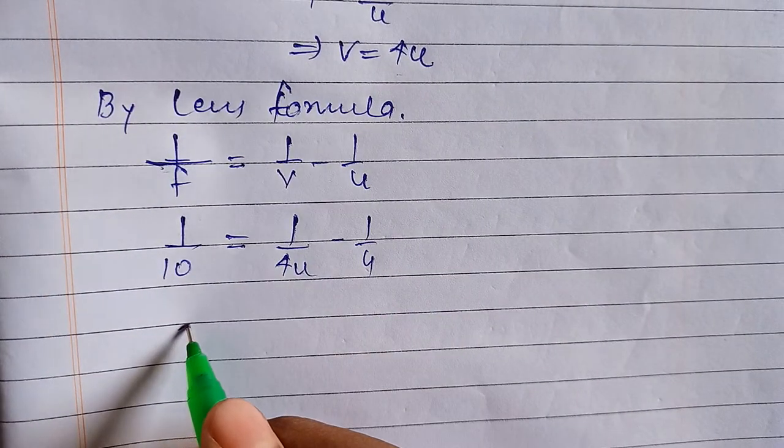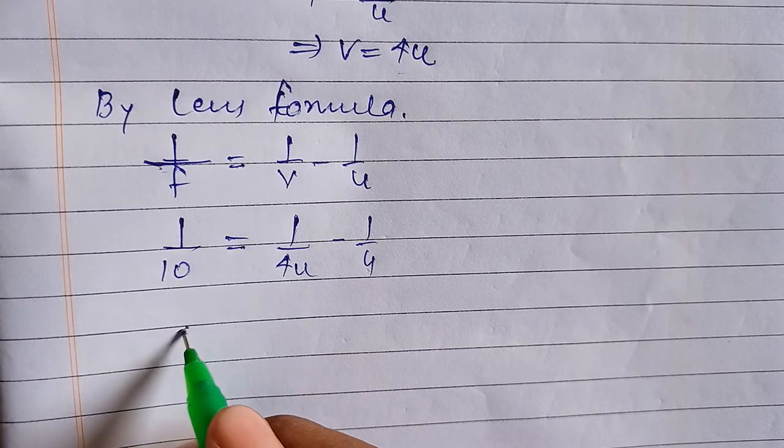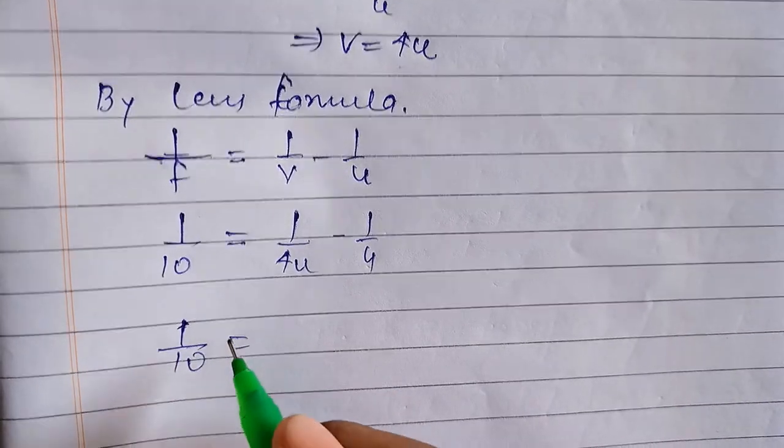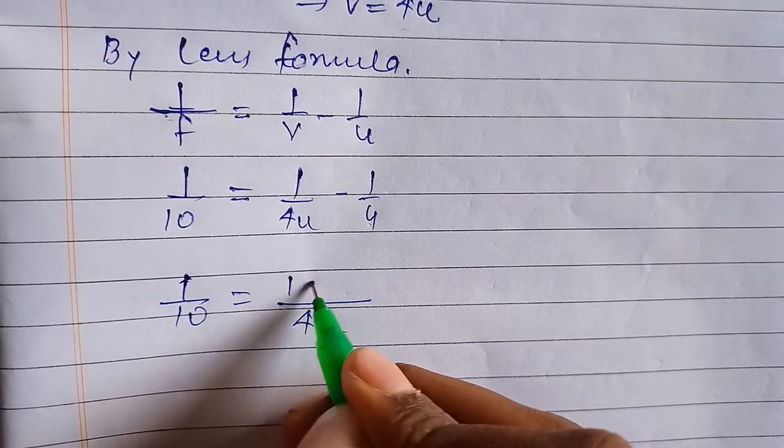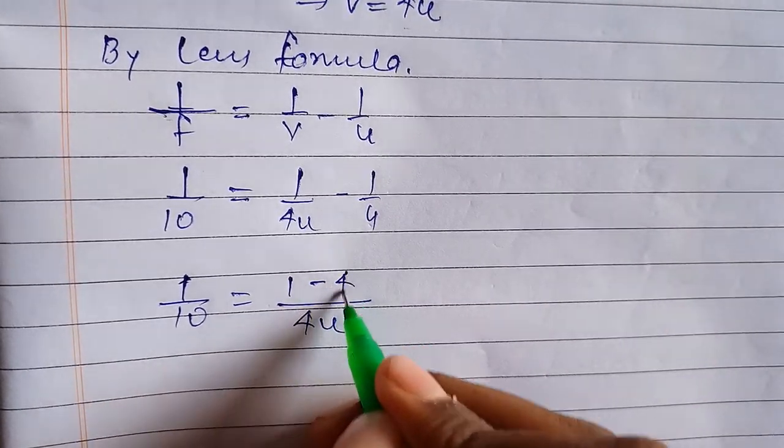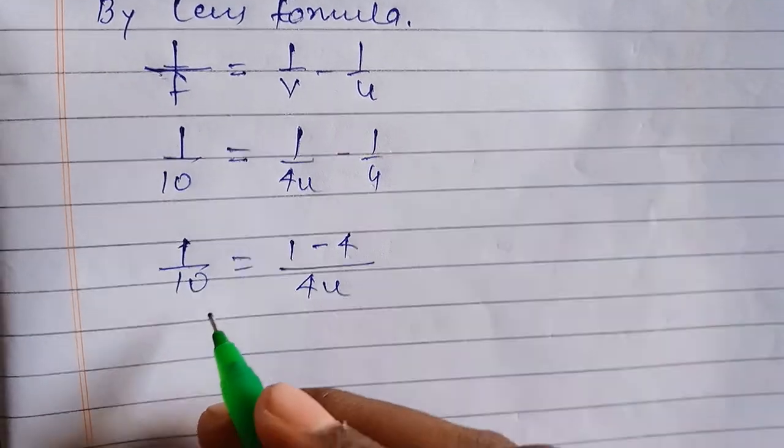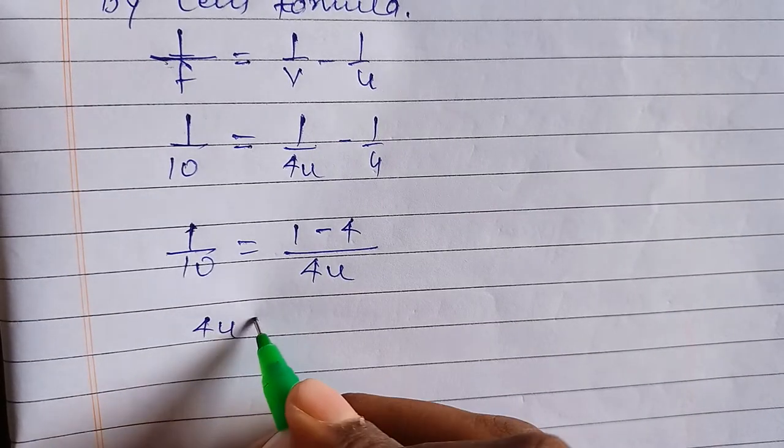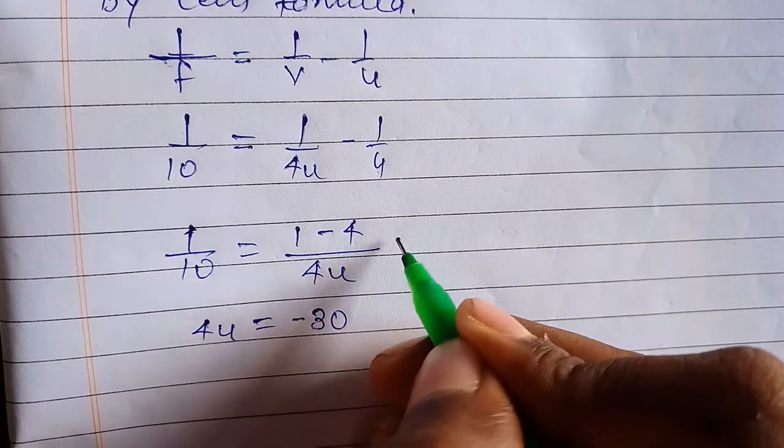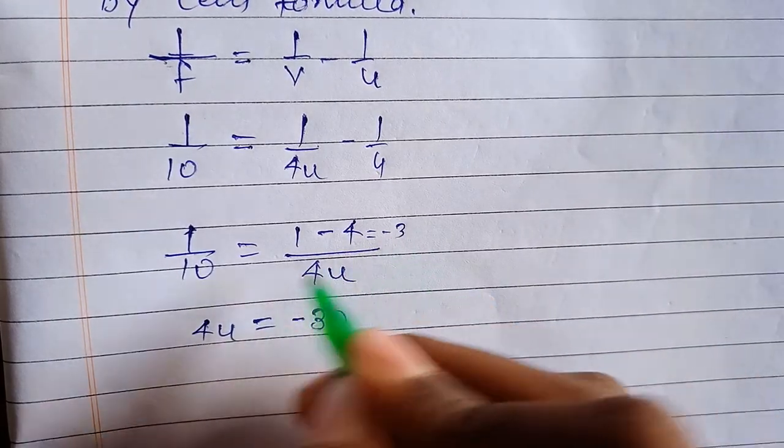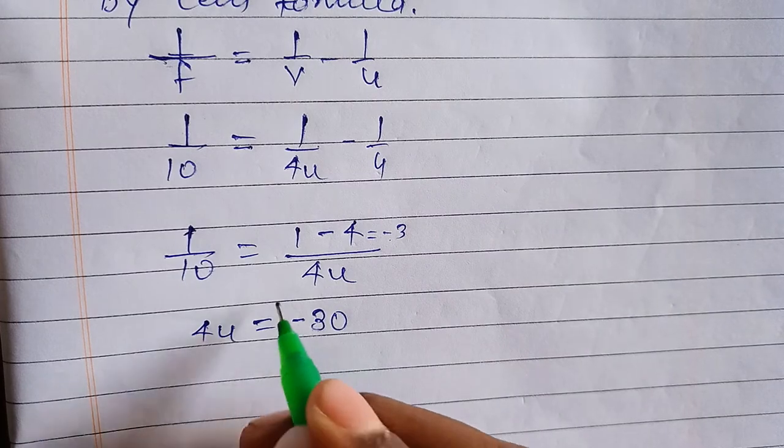So we can write this, we take LCM 4u, 1 minus 4. So 4u equal to minus 30. This become minus 3, equal to minus 3, 10 into minus 3 is equal to minus 30.